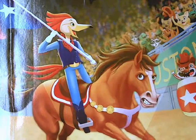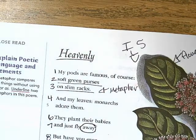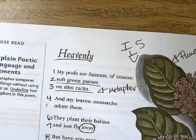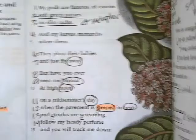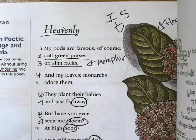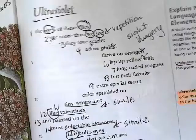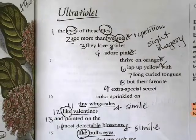Okay, boys and girls, so today we again started off with our My View 4.1. We continued reading the two poems on here, which is Heavenly and Ultraviolet on page 346. Make sure you read these if you have not done so. Ultraviolet as well on page 347.